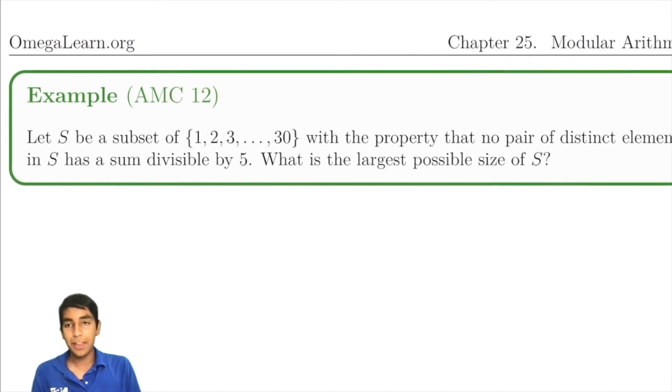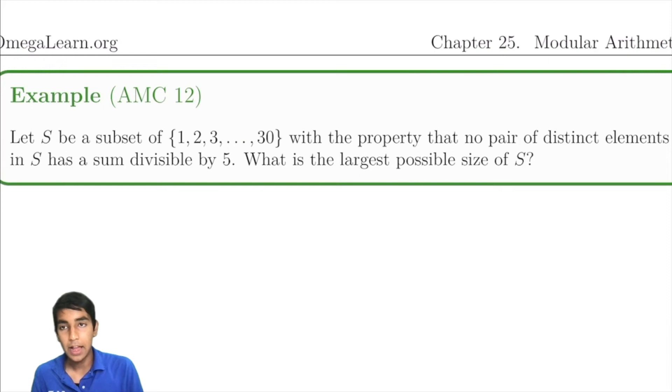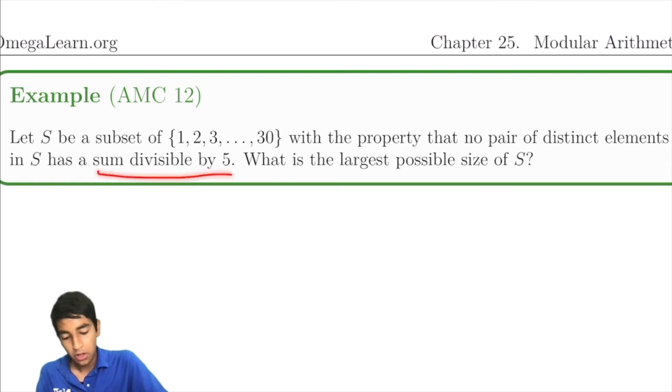Now let's take a look at another example that uses modular arithmetic. Let S be a subset of 1 through 30 with the property that no pair of distinct elements in S has a sum divisible by 5. What is the largest possible size of S?